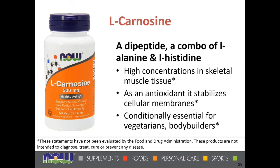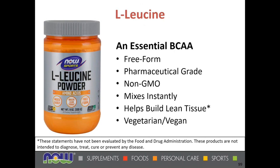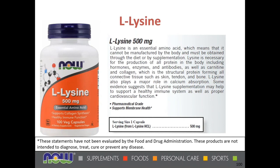L-carnosine — as mentioned, a dipeptide and combination of L-alanine and L-histidine — has high concentrations in skeletal muscle tissue, acts as an antioxidant, stabilizes cellular membranes, and is conditionally essential for vegetarians and bodybuilders. L-leucine is sold as a standalone product — free-form, pharmaceutical-grade, non-GMO, mixes instantly, helps build lean tissue, and comes from vegetarian and vegan sources. L-lysine is also available as a popular amino acid helpful for hormones, enzymes, antibodies, and collagen production in the body.